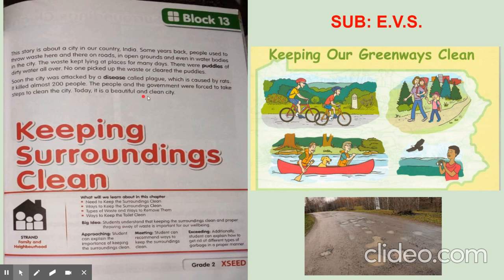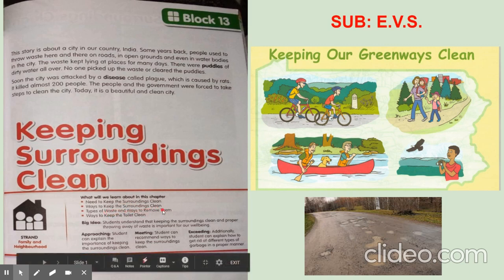Today, it is a beautiful and clean city. It is Surat, in Gujarat. In the same way, Bangalore and Chandigarh are the cleanest cities of India. So, you at least pledge to keep your house and your surroundings — that is your neighborhood — clean. Today we are going to learn: the need to keep the surroundings clean, ways to keep the surroundings clean, types of waste and ways to remove them, and ways to keep the toilet clean.